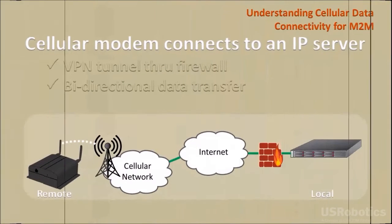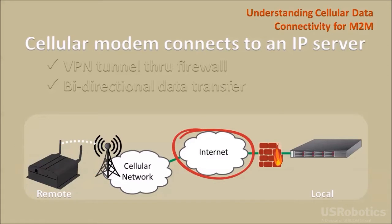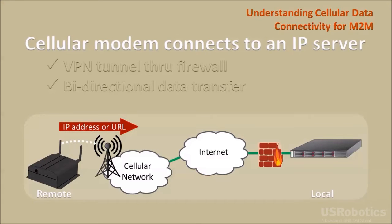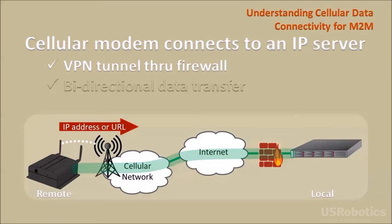The simplest cellular connection uses a remote cellular modem to initiate the connection over the internet to the IP address or URL of an application running on a server. If the server is protected by a firewall, the cellular modem and the firewall can be configured to allow a VPN to tunnel through the firewall to the server. Once the connection is made, data can transfer across the connection in either direction.